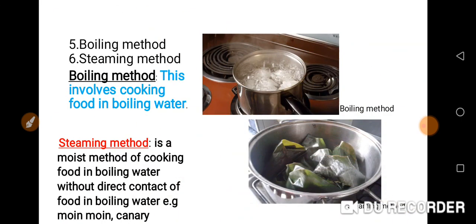The next one is boiling method. Boiling method involves cooking food in boiling water. Steaming method is a moist method — using water — but it is a method of cooking food in boiling water without direct contact of the food with the boiling water, as you can see on the screen. This is moi moi: the water is inside the pot, but the water does not have direct contact with the food, compared to boiling method.